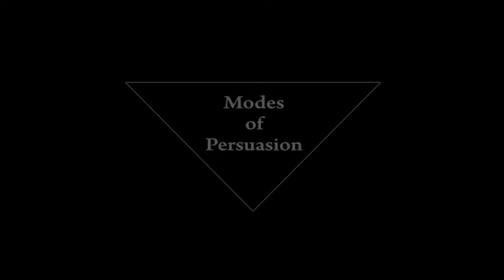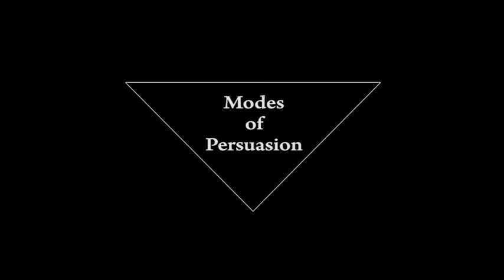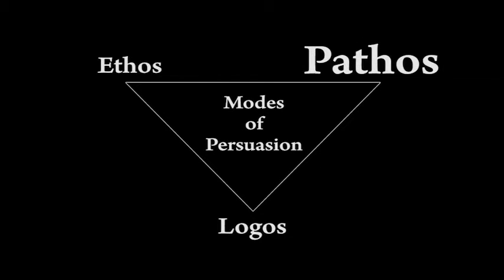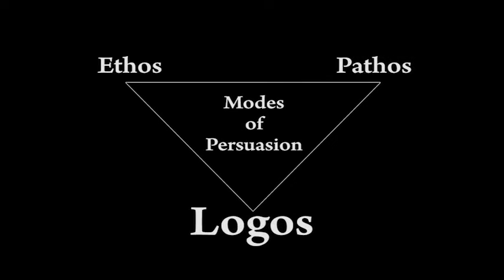Because a speech is persuasive in nature, it's helpful to review Aristotle's three modes of persuasion: ethos, pathos, and logos. Ethos, or ethical appeal, establishes credibility through convincing the audience on the character of the author. This is done through delivery and use of evidence in the speech. Pathos appeals to the emotions of the audience. Logos is persuasion through the use of reason or logic.